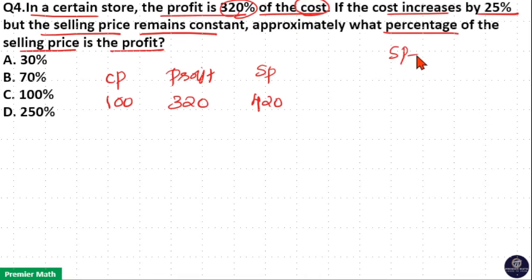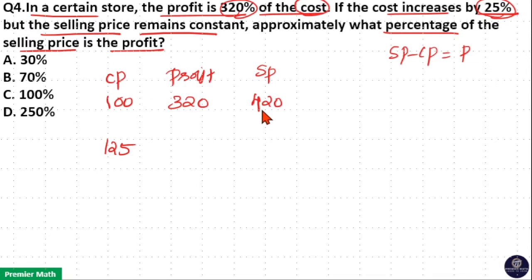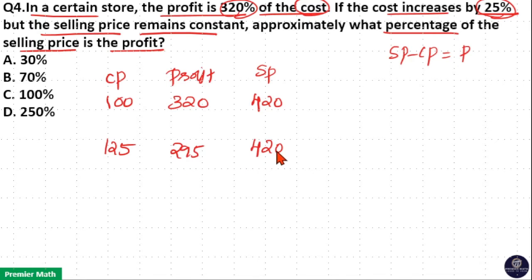That is, SP minus CP is equal to profit. Now, the cost increases by 25%, that is 100 plus 25 equals 125. The selling price remains constant, that is 420 itself. If cost increases by 25%, profit is equal to 320 minus 25, that is 295. Or you can subtract 125 from 420: 420 minus 125 is equal to 295.